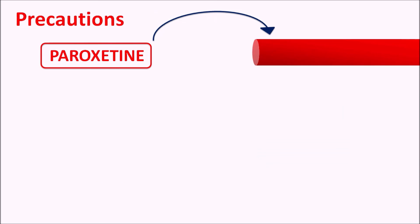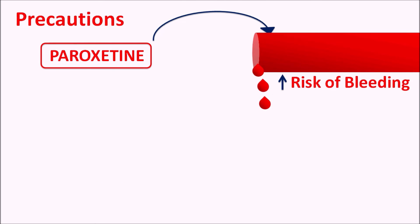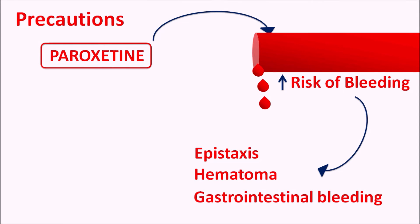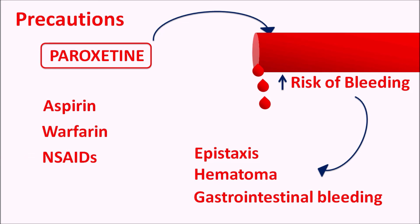Paroxetine can affect blood vessels and increase the risk of bleeding, leading to conditions such as epistaxis (nasal bleeding), hematoma, blood in the urine, and gastrointestinal bleeding. The risk of bleeding is increased particularly when paroxetine is combined with aspirin (an antiplatelet agent), warfarin (an oral anticoagulant), or NSAIDs (non-steroidal anti-inflammatory drugs), which further increase the risk of bleeding.